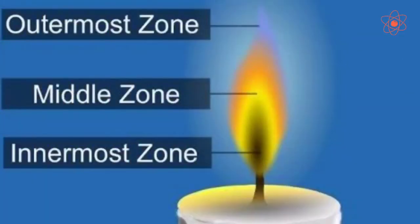When a candle burns, hot molten wax rises up in the wick and vaporizes. The vapor burns with a flame. A candle flame consists of three main zones depending upon the amount of air it receives.